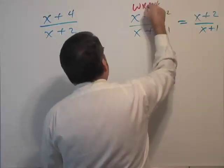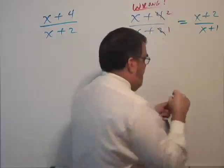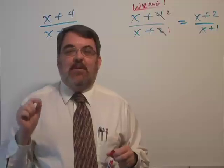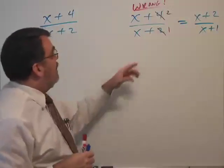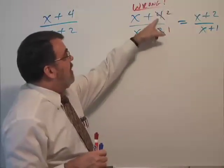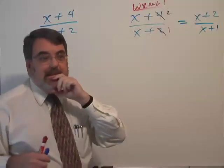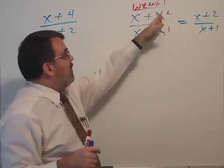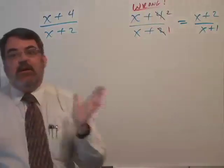They're both wrong because you cannot cancel selectively a common term. Here two is a term common to four and two. I guess you could say it's a common factor to four and two, but it's a common term. It's not a common factor of the entire fraction.